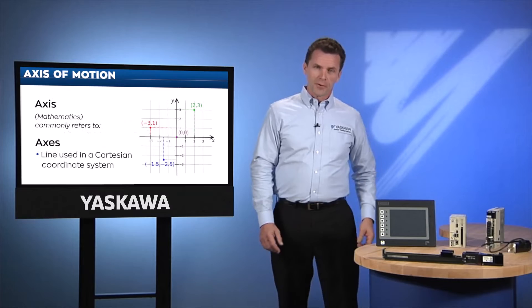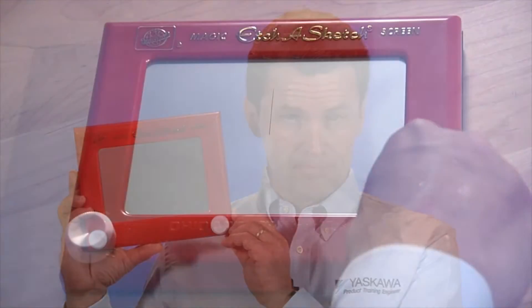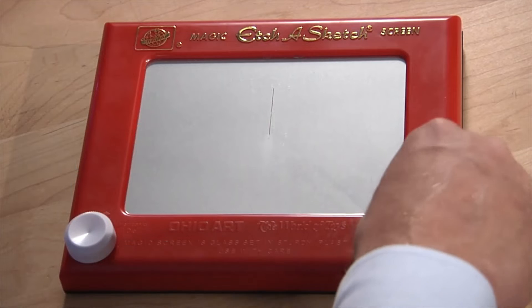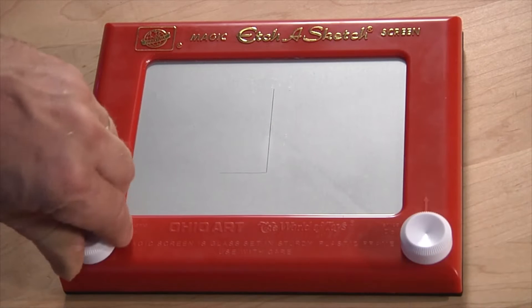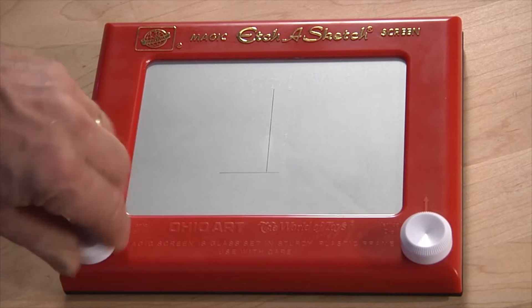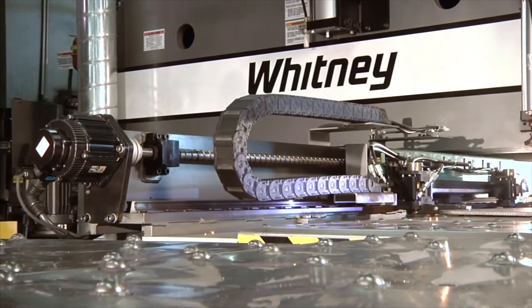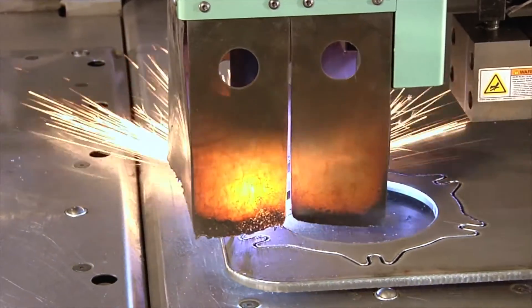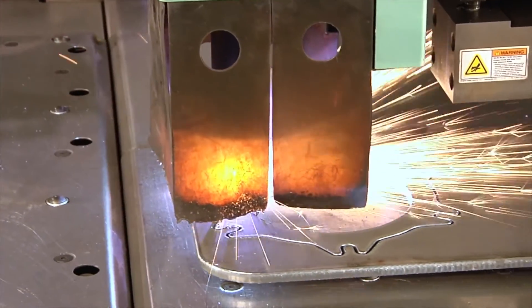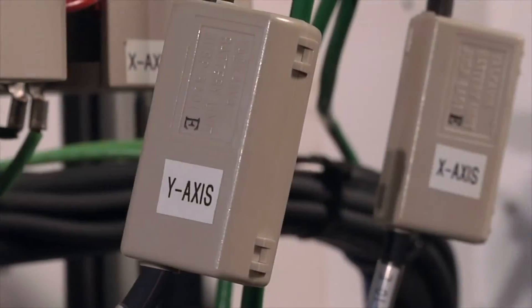Here's another way of looking at it. Imagine that an Etch-a-Sketch toy was controlled by two servos. One servo would control the up and down direction, the other the left and right. Now that would be two axes of motion. In this example, the two axes are mechanically connected together to create two-dimensional motion. But even if there's no connection, each servo is considered an axis.